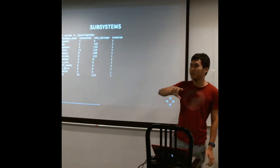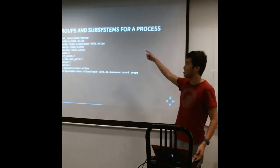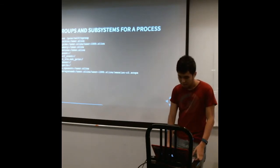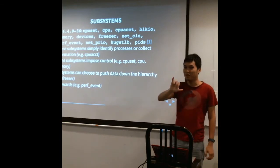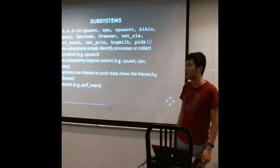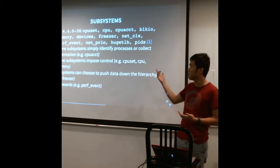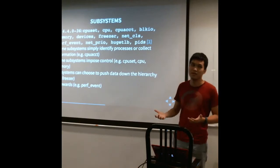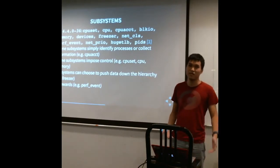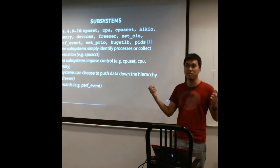You can see the type of subsystems you have on your machine by running this command. These are all the subsystems on my machine. In Linux 4.4, all these subsystems will each create a cgroup and then place processes inside the cgroup based on its hierarchy. Some subsystems don't really do much — they just collect data like CPU accounting. Some subsystems impose controls like how much CPU time you can use or how much memory you can allocate. Some subsystems do freezing and thawing of processes like the freezer subsystem. So a cgroup is basically just a generalized hierarchy of processes that subsystems may or may not want to use.